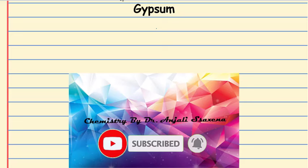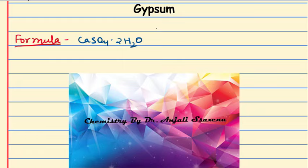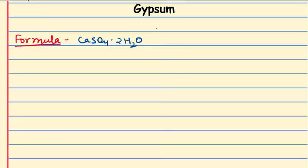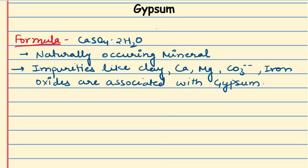Gypsum, which is CaSO4·2H2O, is a naturally occurring mineral found from sedimentary rocks. Generally, gypsum has some impurities attached to it, such as clay, calcium, magnesium, carbonates, and iron oxides. Synthetic gypsum can also be recovered from coal-fired power plants and desulfurization.